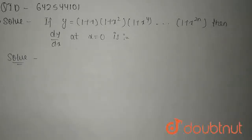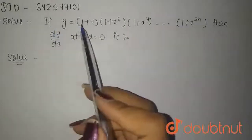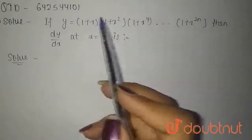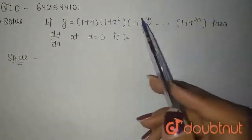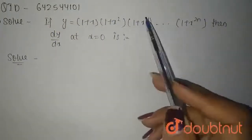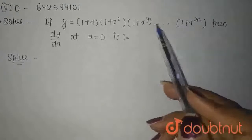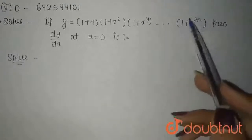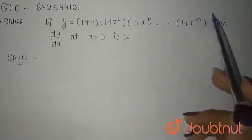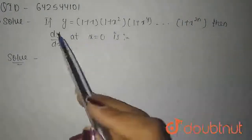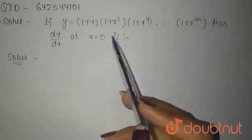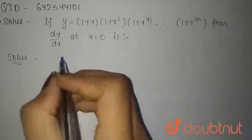Hello everyone, so our question is: if y is equal to (1 plus x) into (1 plus x squared) into (1 plus x to the power 4), up to (1 plus x to the power 2n), then dy by dx at x equal to 0 is?